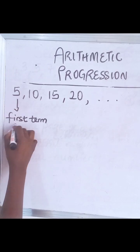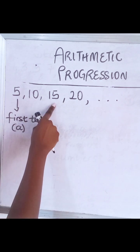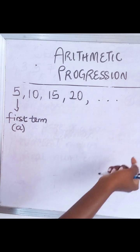So this is called the first term, and the first term is always represented with the letter A. So this is your second term, your third term, your fourth term, and it keeps going.